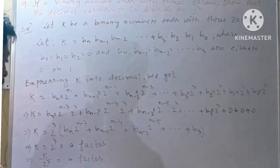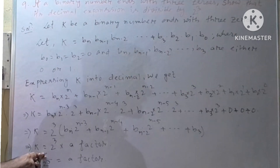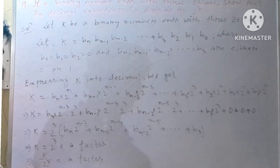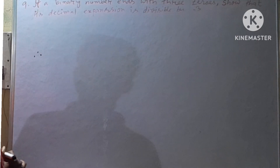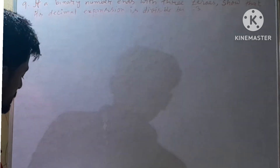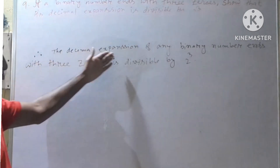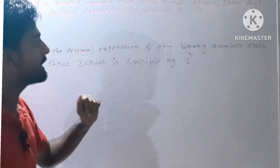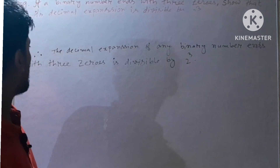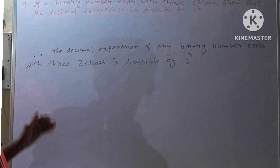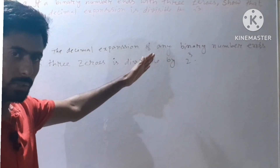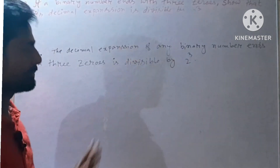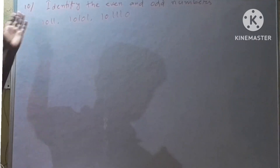So our binary number k is divisible by 2 cubed. Therefore, the decimal expansion of any binary number ending with three zeros is divisible by 2 cubed.